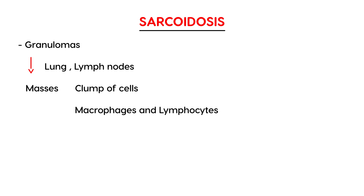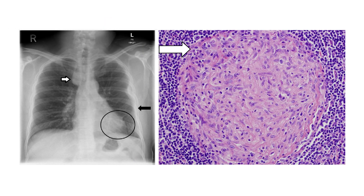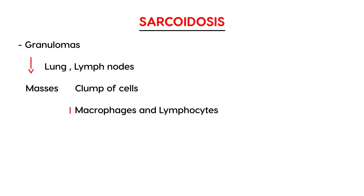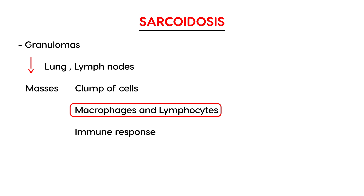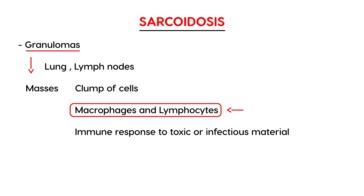These cells cluster together — here is a diagram showing those granulomas in a histological picture. What's happening is that macrophages and lymphocytes cluster because of an immune response to some toxic or infectious material. For example, if the body is introduced to a virus, a bacteria, or some inhaled foreign agent, the body responds with an immune response by creating these granulomas.